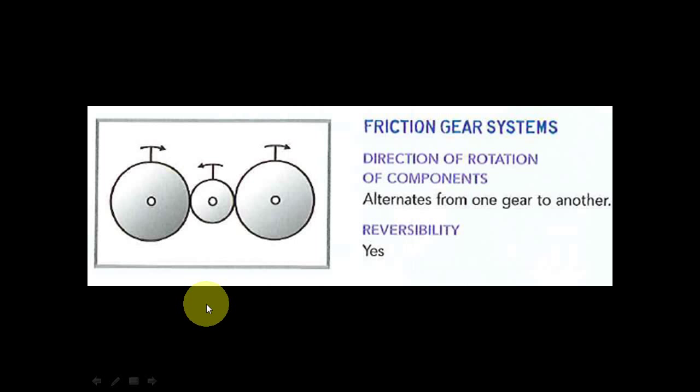Friction gear systems are pretty much self-explanatory. They can go backwards. All they do is they're touching each other at all times so that they can move. Whereas, there is no threading, no teeth. They're not serrated.